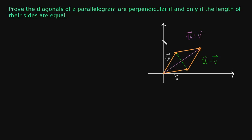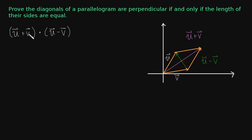So we have our two diagonals. Let's convert this statement into math. What we're trying to prove is that the diagonals, u plus v and u minus v, are perpendicular. We could say that their dot product is zero. So: the diagonals are perpendicular if and only if the lengths of their sides are equal — that is, the length of u equals the length of v.